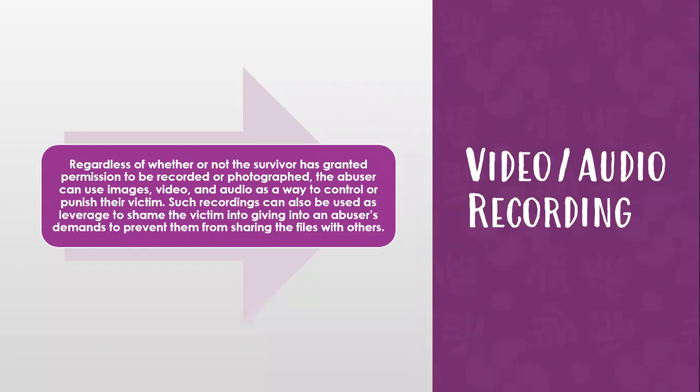Next, we have video and audio recording. Regardless of whether the survivor has granted permission to be recorded or photographed, the abuser can use certain pictures, videos, or audio recordings to punish the survivor. These recordings could be anything — maybe you said something about someone and they caught you on camera, or maybe you're doing something private or embarrassing. They might threaten to post these videos, recordings, or pictures online if you don't give in to what they're saying, and they might also use them to produce shame for the survivor.